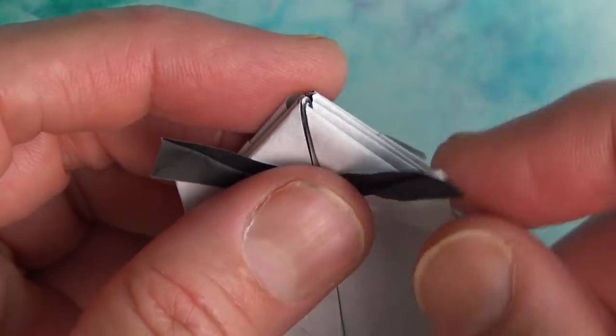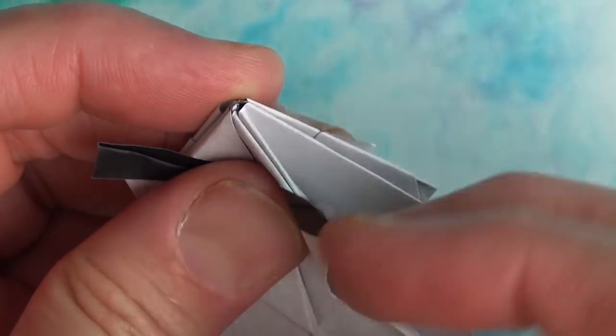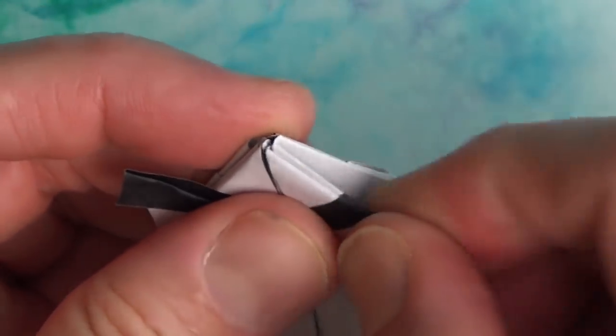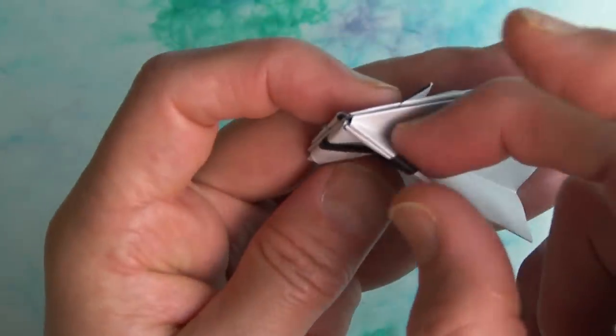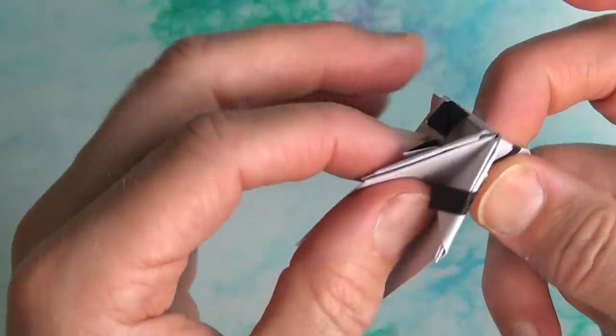And now wrap this flap over the edge, not in the first one but the second slot, right in there. And repeat. Now put your finger in there, and in here, and in here, and blow into here. And there's your noob. Shape it to taste. You're done.